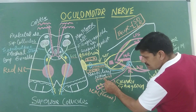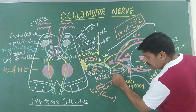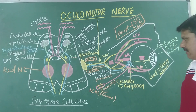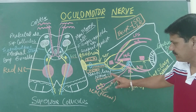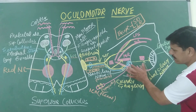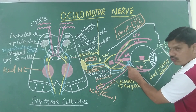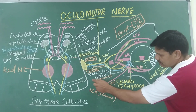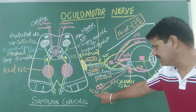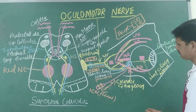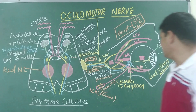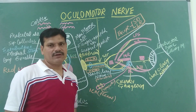The third root is sensory. Through the nasociliary nerve, which is a branch of the ophthalmic nerve, communicating branches pass to the ciliary ganglion. So in summary, the ciliary ganglion receives parasympathetic fibers through the oculomotor nerve, sensory fibers through the nasociliary branch of the ophthalmic nerve, and sympathetic fibers through the internal carotid plexus. The post-ganglionic fibers then innervate the constrictor pupillae and the ciliary muscles, which are the intrinsic muscles of the eye.